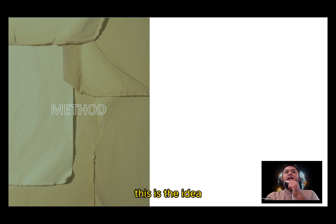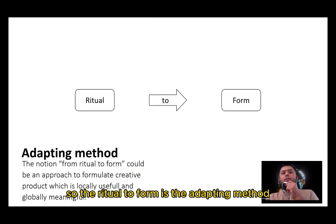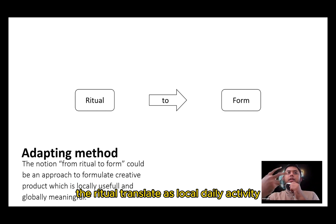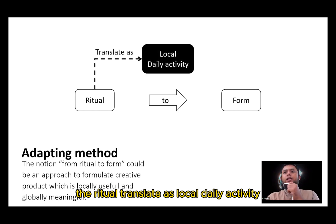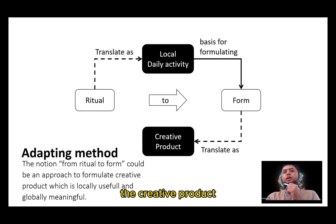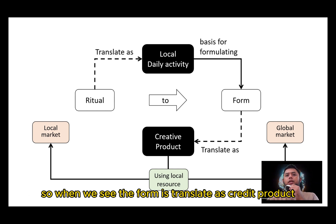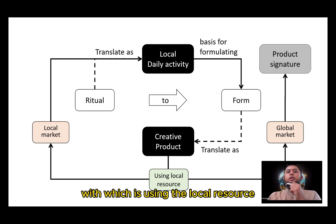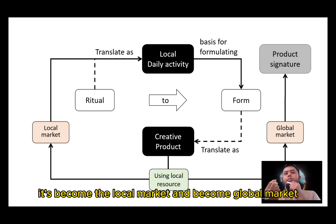This is the idea. The ritual-to-form approach is an adapting method. The ritual is translated as local daily activity, and the form is the basic element for formulating the creative product. When the form is translated into a creative product, that creative product will serve the local community by using local resources.